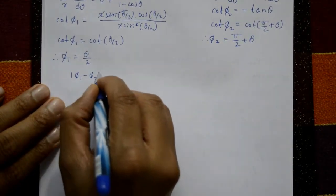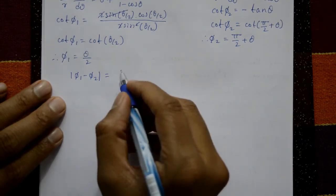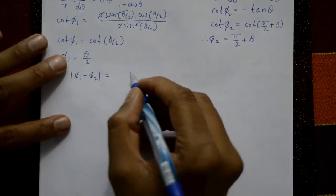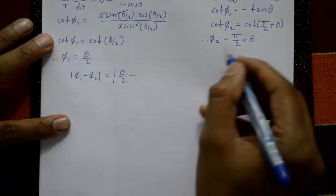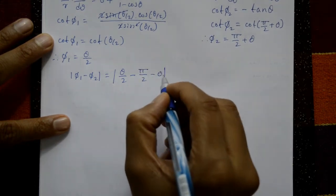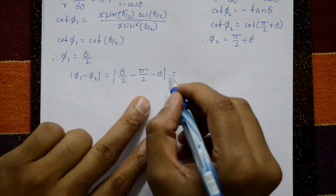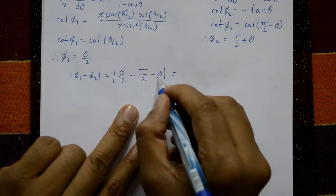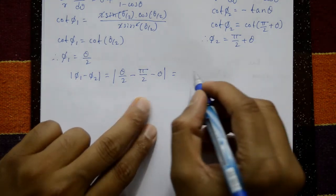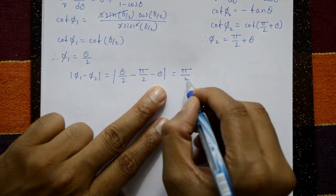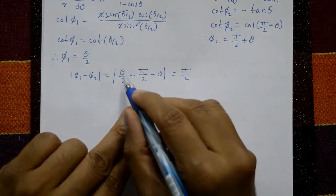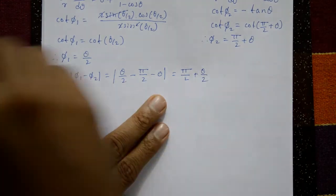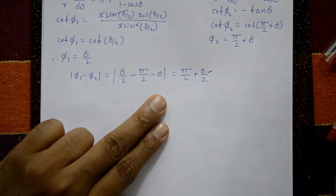Now |φ₁ − φ₂| = |θ/2 − (π/2 + θ)| = |θ/2 − π/2 − θ| = |−π/2 − θ/2|. Taking the modulus (plus or minus), this becomes π/2 + θ/2, or equivalently θ/2.